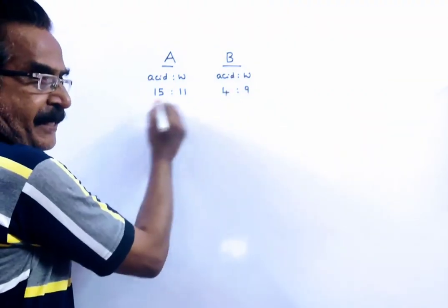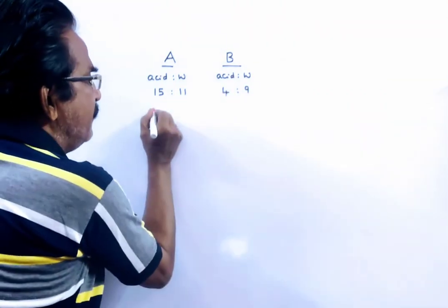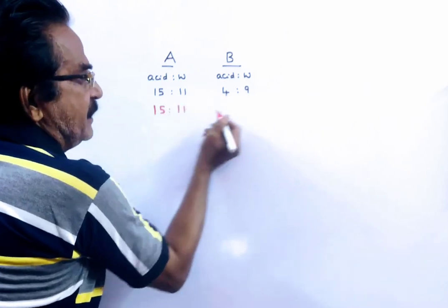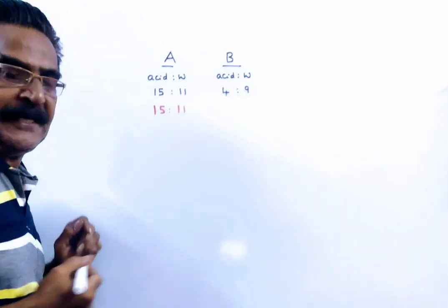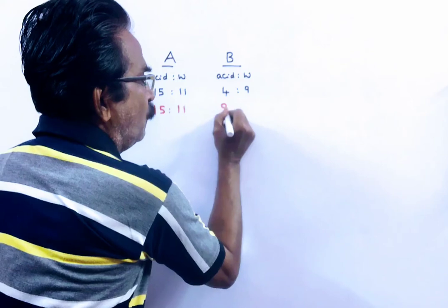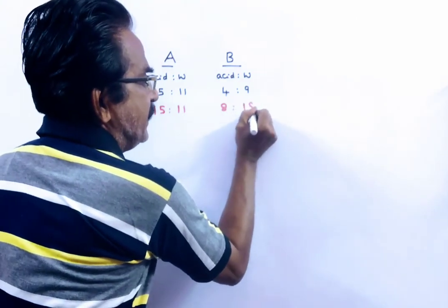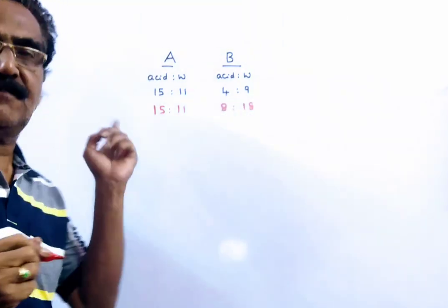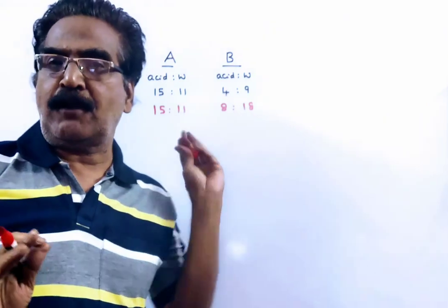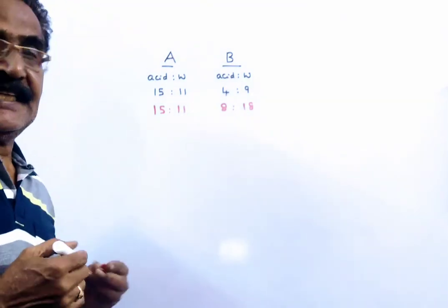So firstly, let us make these two ratios equal. This is 15 to 11, 26. Let us multiply this ratio by 2. 2 times 4 is 8, 2 times 9 is 18. 18 plus 8 is 26, 15 plus 11 is 26. First we have to do this.